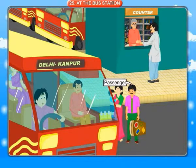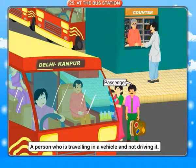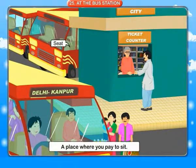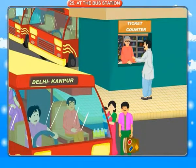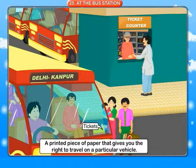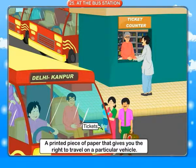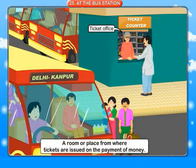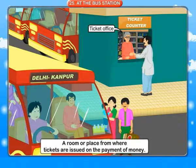Passenger: a person who is traveling in a vehicle and not driving it. Seat: a place where you pay to sit. Ticket: a printed piece of paper that gives you the right to travel on a particular vehicle. Ticket office: a room or place from where tickets are issued on the payment of money.